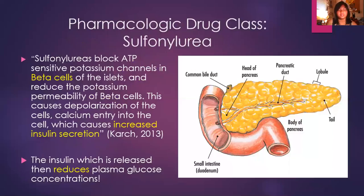Here is how sulfonylureas work. They block ATP-sensitive potassium channels in the beta cells of the islets inside the pancreas and reduce the potassium permeability of beta cells. This causes depolarization of the cells and calcium entry into the cell, which causes an increase in insulin secretion. With this increase in insulin secretion, it reduces the plasma glucose concentration, so our type 2 diabetic patients can hopefully maintain a good blood glucose range.